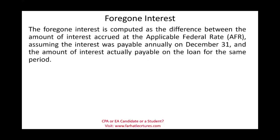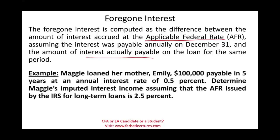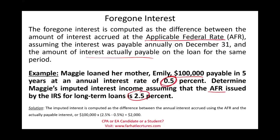The foregone interest is computed as the difference between the amount of interest accrued at the applicable federal rate (AFR), assuming interest is payable annually on December 31st, and the amount of interest actually payable on the loan for the same period. Example: Maggie loaned her mother Emily $100,000 payable in five years at an annual rate of 0.5%. The IRS federal rate for long-term loans is 2.5%. The difference is 2%, so $100,000 × 2% = $2,000 in additional imputed interest income Maggie must include.